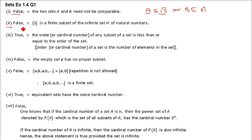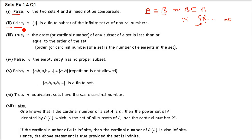Second statement: every subset of an infinite set is infinite. If you take an infinite set of natural numbers, it starts from 1 and goes up to infinity. But if you take just one element, it is finite. So it is false — every subset of an infinite set is not necessarily infinite; it can be finite also.